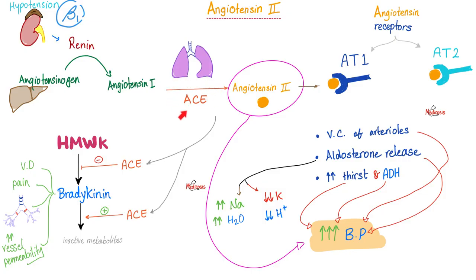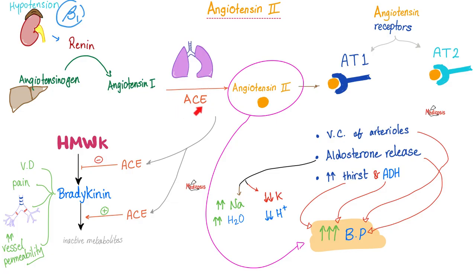Angiotensin-converting enzyme converts angiotensin 1 into angiotensin 2, but it also inhibits the conversion of high-molecular-weight kininogen into bradykinin. Even if some bradykinin is made, ACE converts it into inactive metabolites — essentially trash. So ACE is anti-bradykinin. People taking ACE inhibitors will inhibit the ACE, so they won't suppress bradykinin — they'll have more bradykinin. Bradykinin causes vasodilation and bronchoconstriction. That's why patients on ACE inhibitors suffer from dry cough and angioedema.